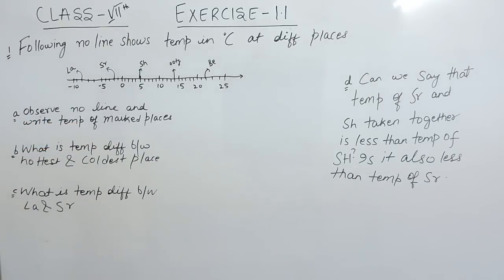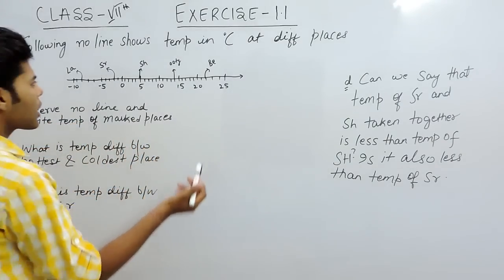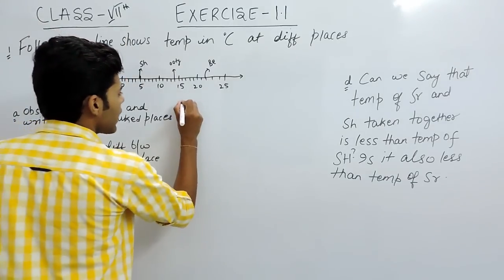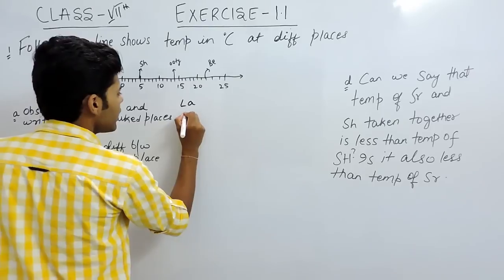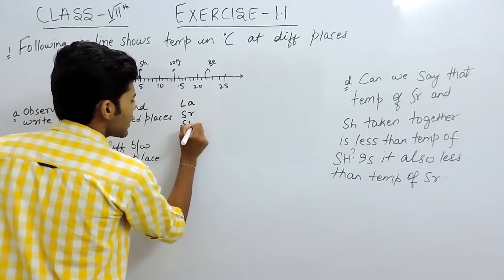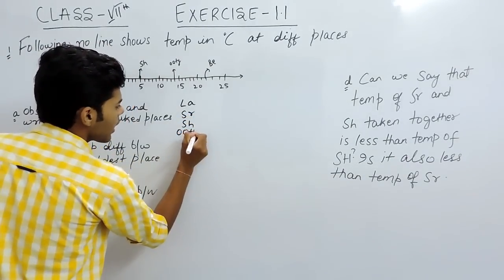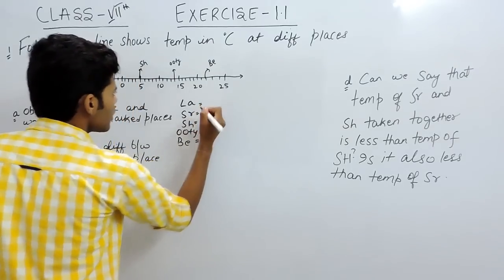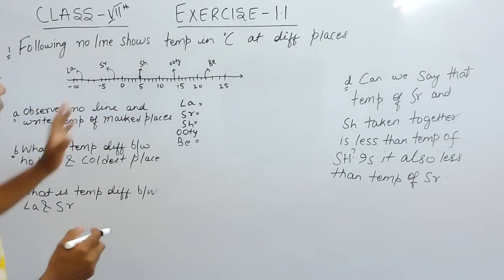Now, first part: observe the number line and write temperatures of marked places. So there are 5 marked places. Now we will write the temperature of LA, SR, SH, UT and BE. So, first of all LA.